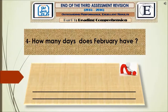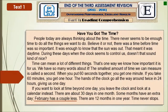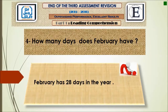Moving to question number four: How many days does February have? It is stated in the last paragraph: 'February has a couple less.' Couple means two, so February has two days less. If a month contains 30 days and February has two days less, we subtract 30 minus 2 to get 28. So February has 28 days in the year.